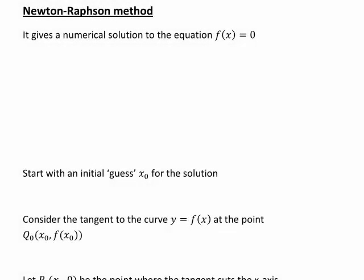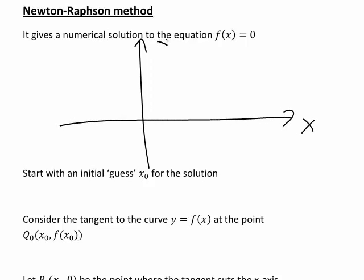In this recording we look at the Newton-Raphson method for finding numerical solution to an equation of the form f of x equals 0. Let's start off by looking visually at the situation. We have a function y equals f of x. I'm just going to draw one like that.